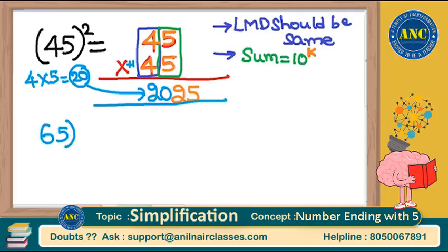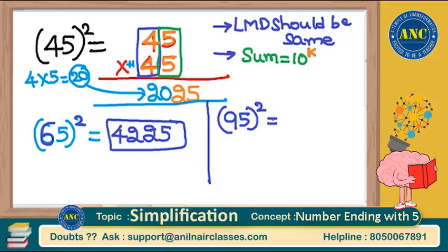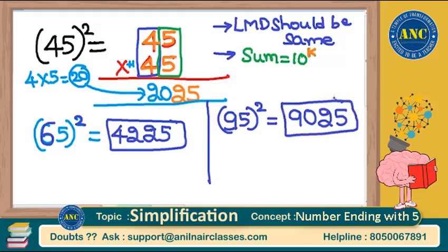One more example: 65 square. 5 square is 25; 6 into next number — 6 into 7 is 42. Answer is 4225. Now 95 square: 5 square is 25; 9 into next number — 9 into 10 is 90. Answer is 9025.